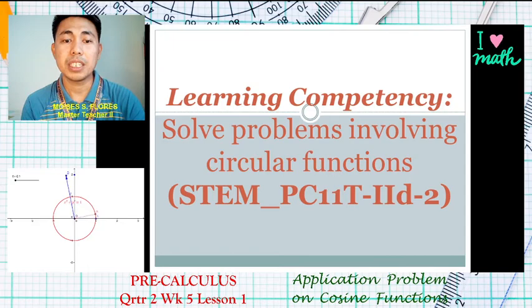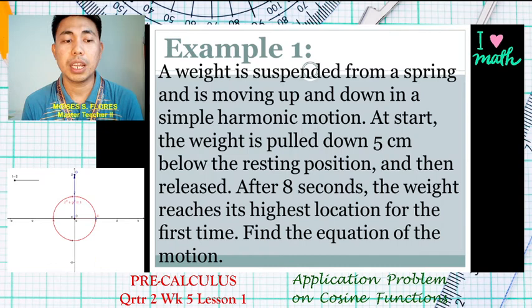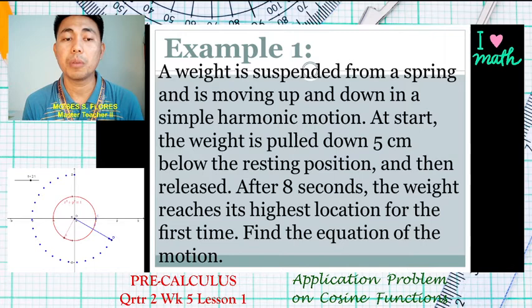We have our first example. A weight is suspended from a spring and is moving up and down in simple harmonic motion. At the start, the weight is pulled down five centimeters below the resting position and then released. After eight seconds, the weight reaches its highest location for the first time. You are asked for the equation of the motion.